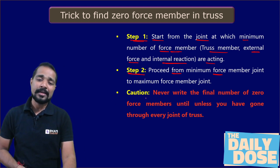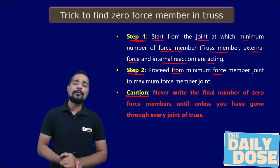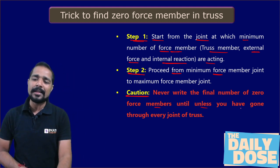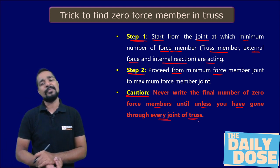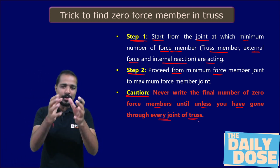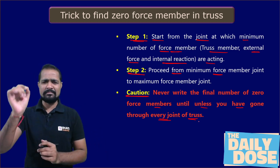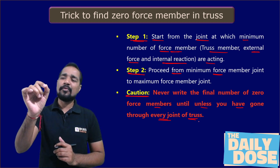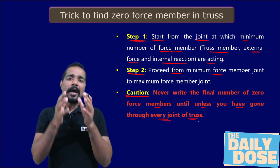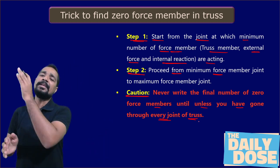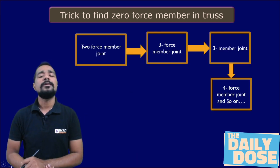Here is an important caution: never write the final number of zero force members until you have gone through each and every joint of the truss. Generally, students start guessing — if five is not the answer then maybe six. Don't guess the answer until you have not gone through each and every joint.